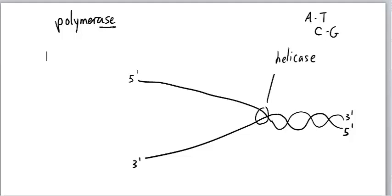So the problem with, not the problem, but the polymerase can only make new strands in the 5' to 3' direction. It only goes from 5' to 3'.